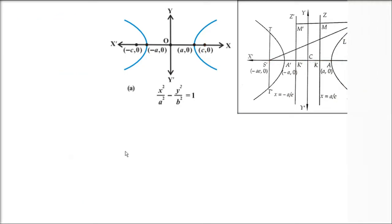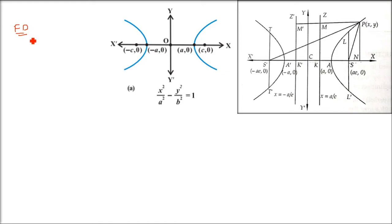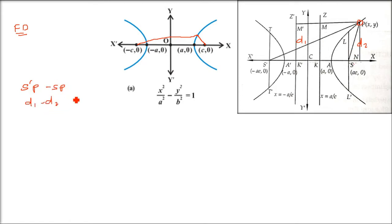The same formula applies for both ellipse and hyperbola. Now, focal distances: take any point on the hyperbola — the distances from that point to the two foci are the focal distances. If we call them d1 (from S' to P) and d2 (from S to P), then d1 minus d2 is always a constant equal to 2a, which is the definition of a hyperbola and equals the transverse axis.